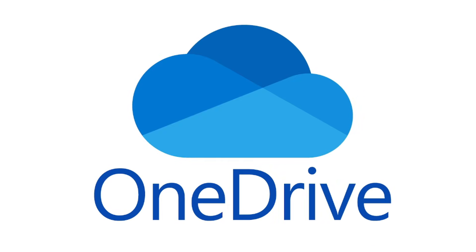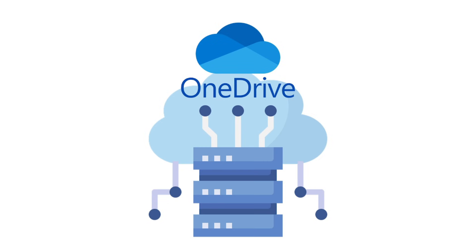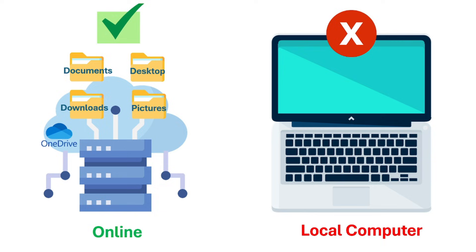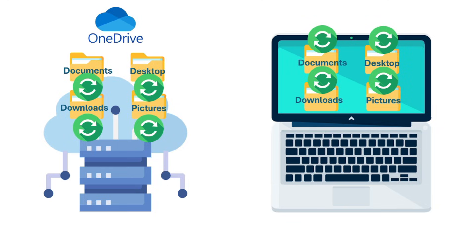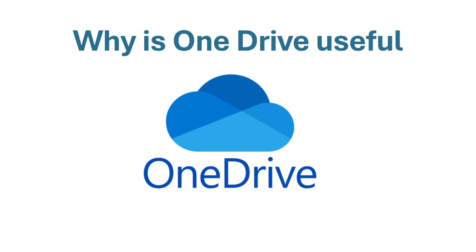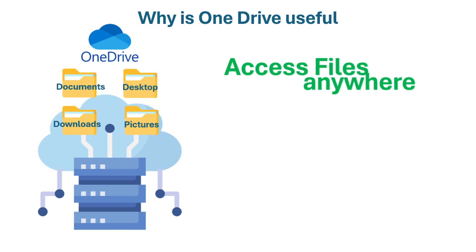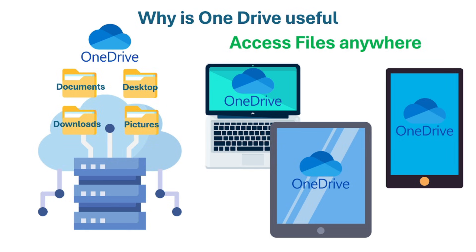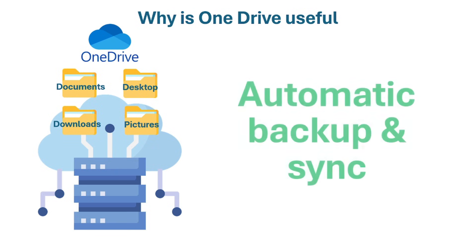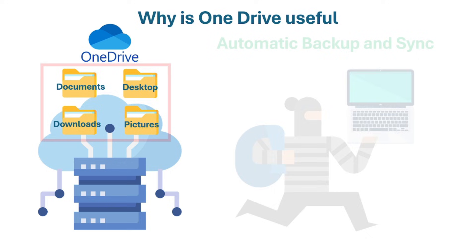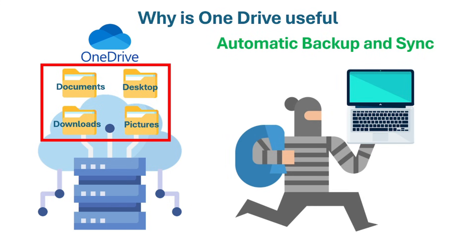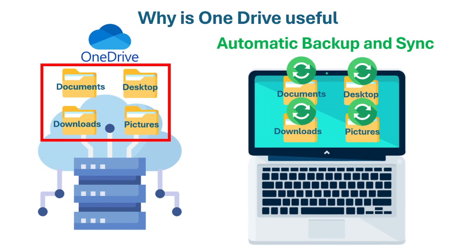Microsoft OneDrive is a cloud storage service that lets you save your files online instead of only on your computer's hard drive. It automatically syncs your files between your laptop and the cloud. It's useful because you can access your files anywhere — log into your Microsoft account on any device, phone, or tablet and instantly access your documents, photos, and files with no USB drive needed. It also provides automatic backup: if your laptop gets stolen, lost, or damaged, your files are still safe in OneDrive, and once you sign in on a new laptop, all your files sync right back.